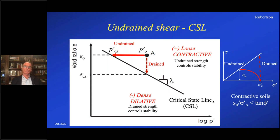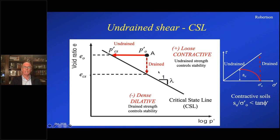So if we talk about undrained shear and undrained strength — you had your short course by Mike Jefferies and Dawn Shuttle, and they talked about the whole critical state framework. I'm going to show the critical state line. Here's an example: the concept of plotting void ratio against the log of mean effective stress. The critical state line is represented here as a straight line. Soils can exist on either side of it — on the loose side they are contractive as they move towards critical state, or on the dense side they tend to be dilative.